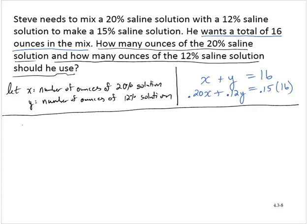Let's rewrite: x plus y equals 16, and I'm going to clean it up a little bit. 0.2x plus 0.12y, and 15% of 16 is 2.4. So now let's solve this system.